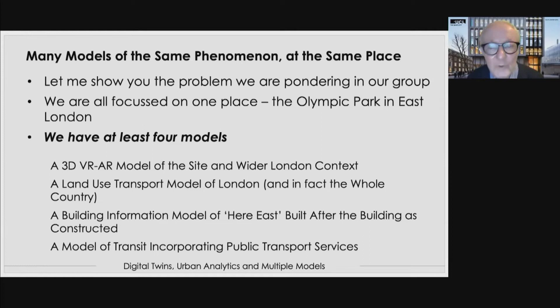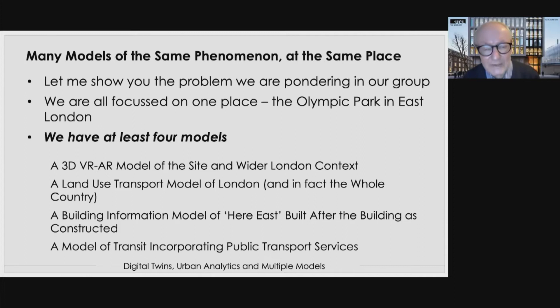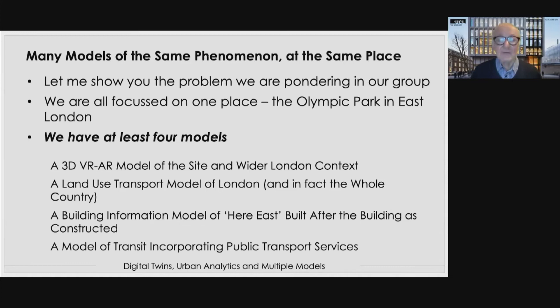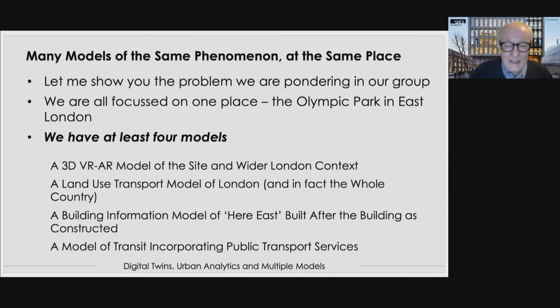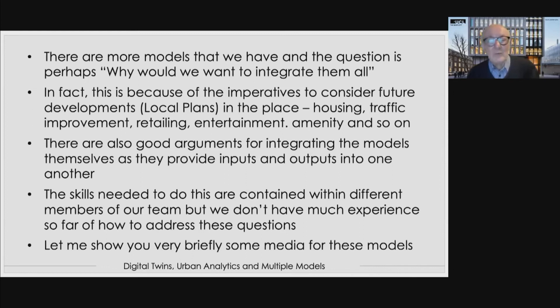We have at least four models, and the place in question is the Olympic Park in east London — a very hot area of development. The Olympic Stadium is now the West Ham football ground, with major retail and entertainment in the area. We have four models: a 3D VR model, a land use transport model of London (our QUANT model, funded by Turing), a Building Information Model of the Here East building on the site, and a transit model incorporating public transport services. The major development in east London is the construction of Crossrail, which is opening very soon.